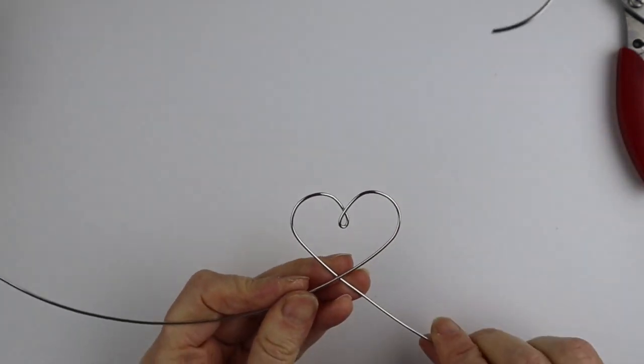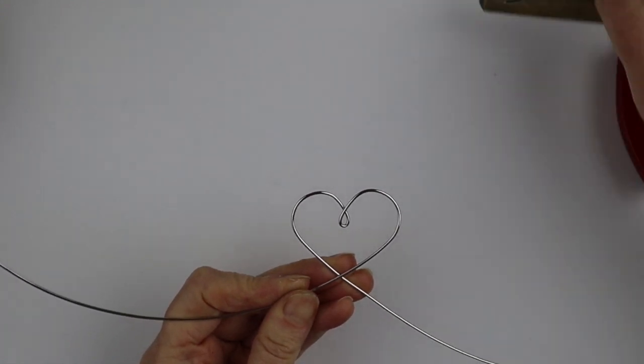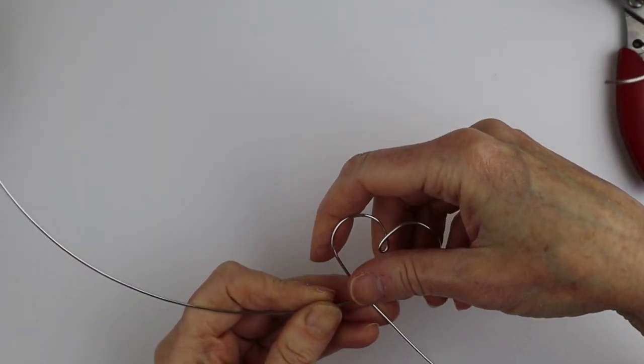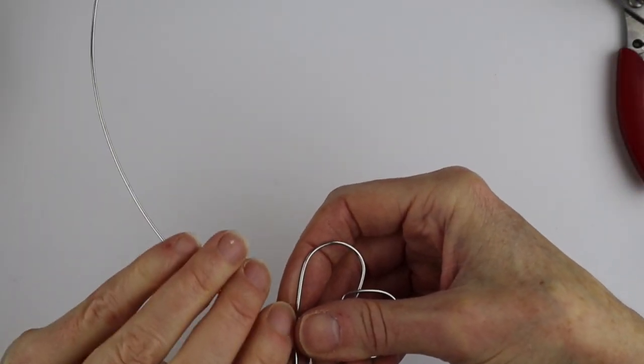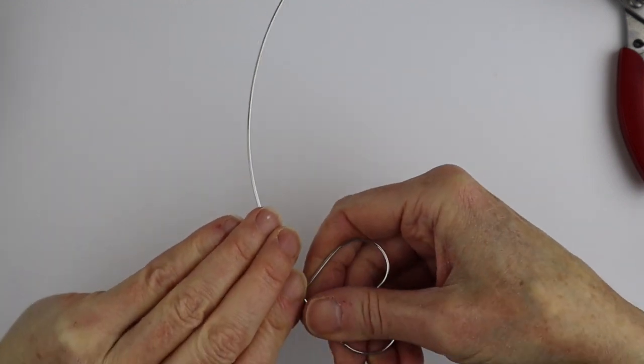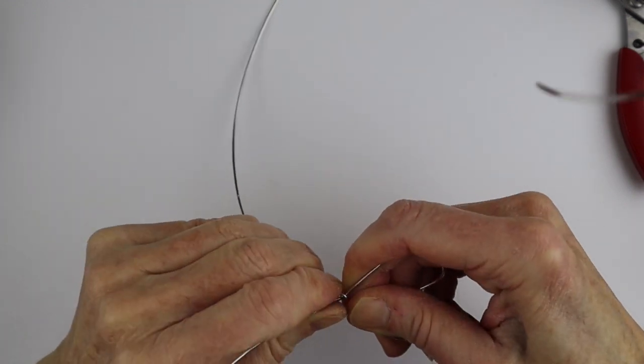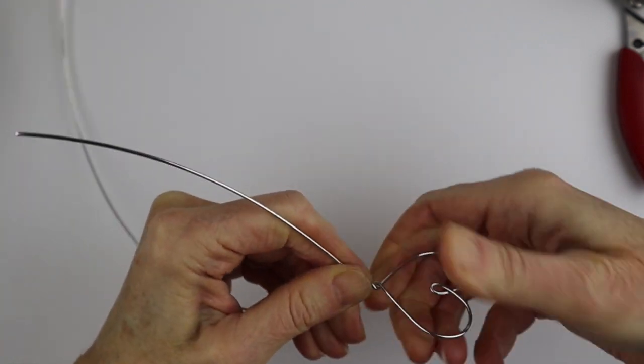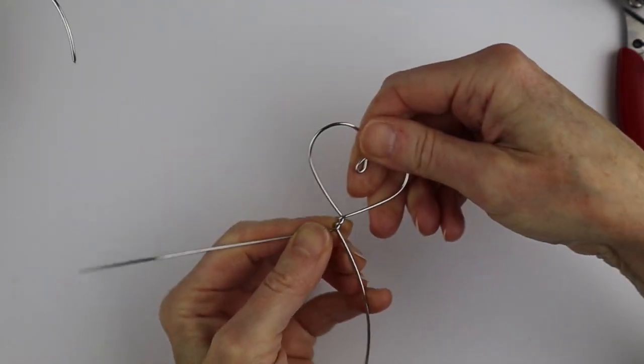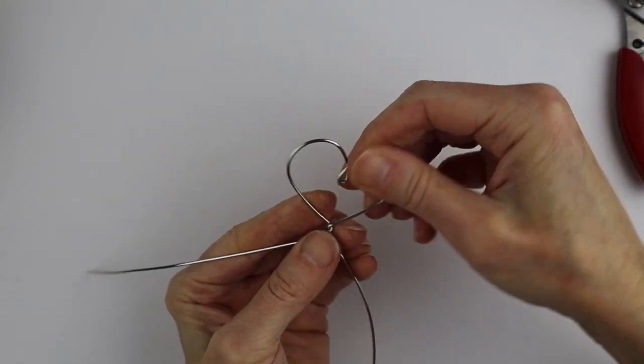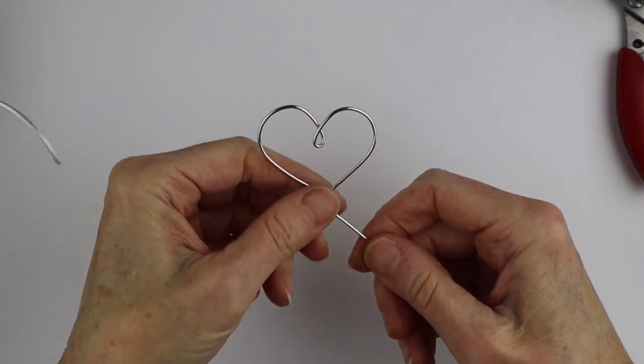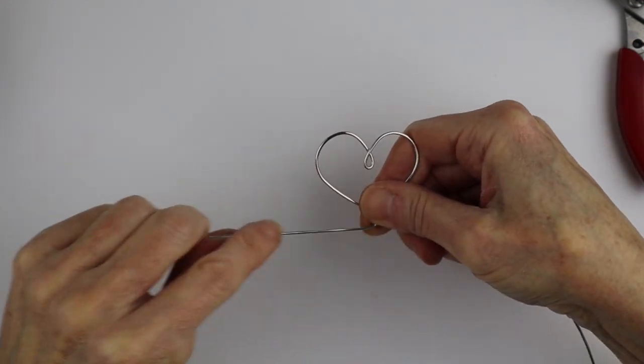So what we're going to do is start with the heart. And you can give it a bend if you want, that's not a problem at all. If you want it more like secured, you can just take this and give it a little twist around. That could be really cute too. It's got a little lopsided, but that's fine too. So we're going to bring it out here.